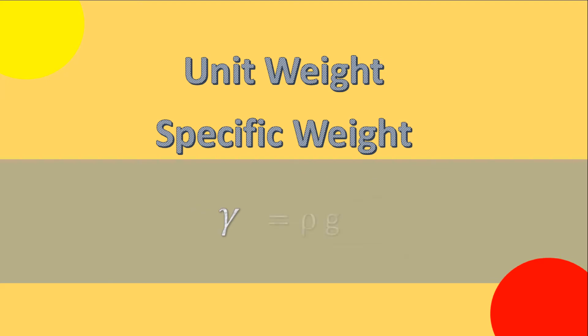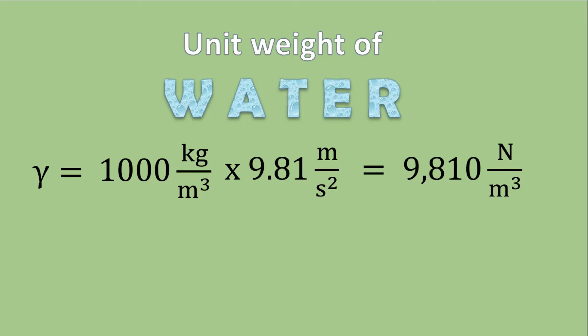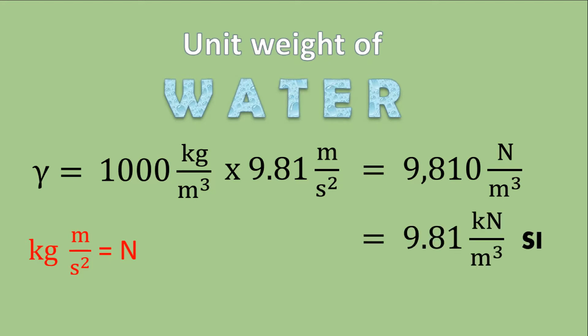Unit weight can also be computed by multiplying mass density by gravitational acceleration. For example, water has a mass density of 1,000 kilogram per cubic meter. Multiplying by 9.81 m/s² gives a unit weight of 9,810 newton per cubic meter, or 9.81 kilonewton per cubic meter in SI — meaning 1 cubic meter of water weighs 9.81 kilonewtons. For English units, the unit weight of water is 62.4 pounds per cubic foot.